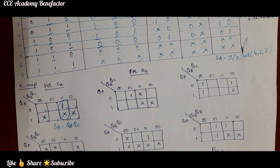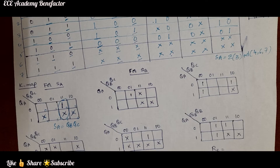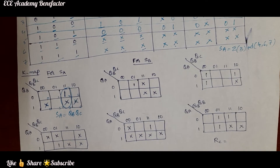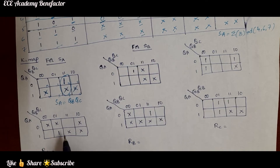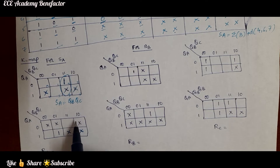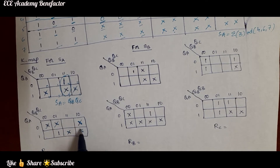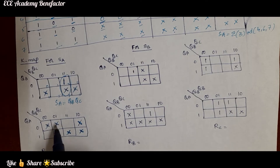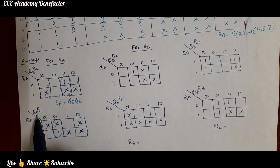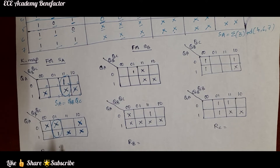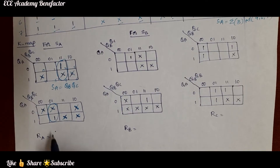Similarly, for RA: it is 1 at state 5 and do not care at states 6, 7, and also do not care at 0, 1, 2. We form one pair, and RA simplifies to Q̄B·QC.